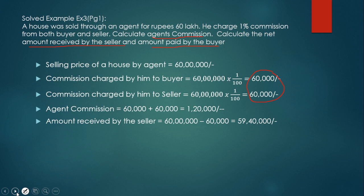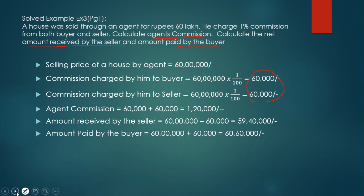Finally, the amount paid by the buyer. Since the buyer is purchasing the house, he pays 60 lakhs as the transaction price, plus the agent's service commission of 60,000. So the total amount paid by the buyer = 60,60,000.